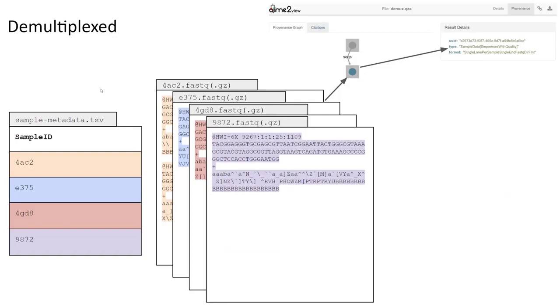When the demultiplexing process is complete, instead of having one FASTQ for all of our samples, we'll now have one FASTQ file per sample. And we no longer need our barcode file because we have already extracted information that we used from them. So, this is what we refer to as a demultiplexed file.